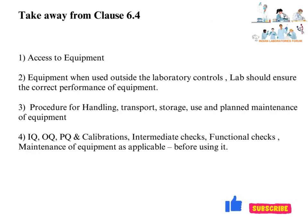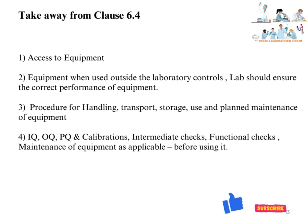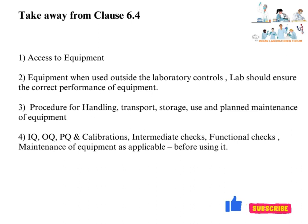Key takeaways from Clause 6.4 of ISO/IEC 17025:2017: Access to equipment should be available. When equipment is used outside laboratory controls, the lab should ensure correct performance. The lab should have a procedure for handling, transport, storage, use, and planned maintenance. Records of IQ, OQ, PQ, calibrations, intermediate checks, functional checks, and maintenance should be available.